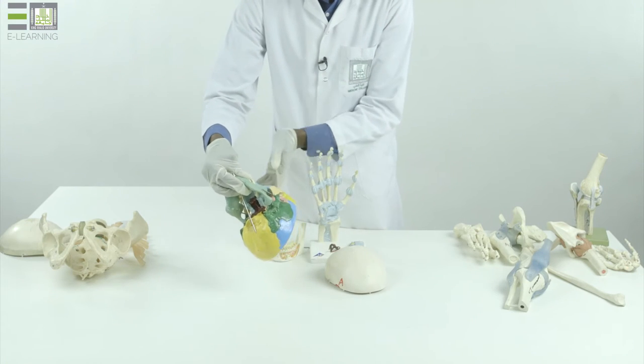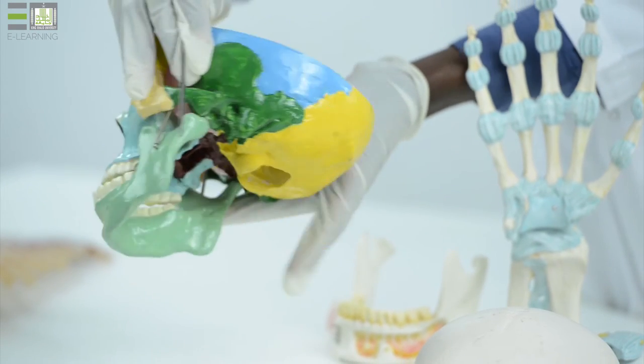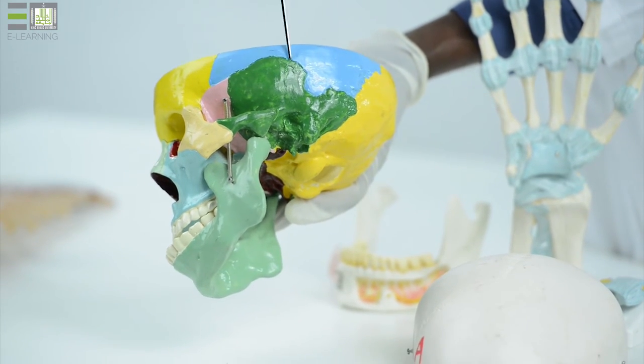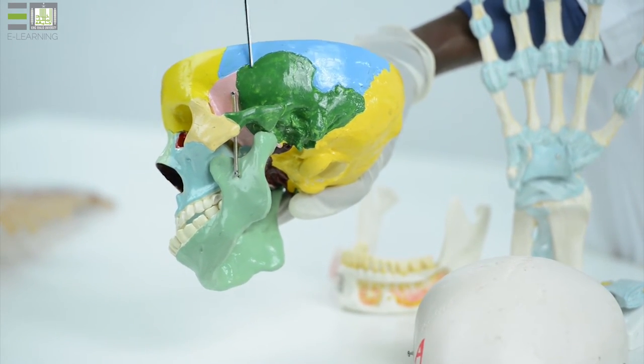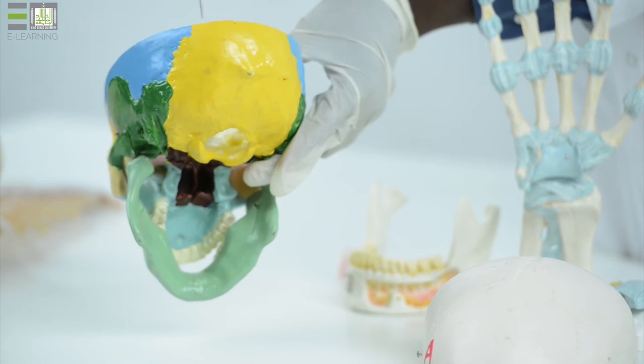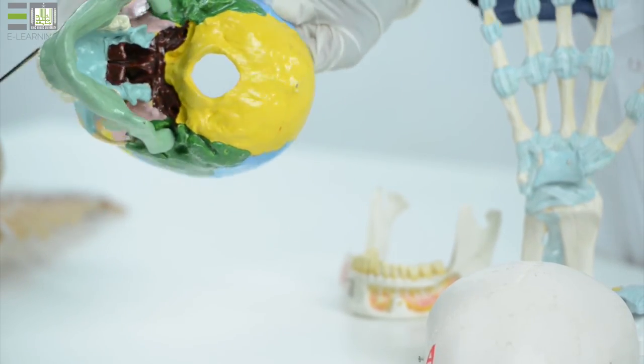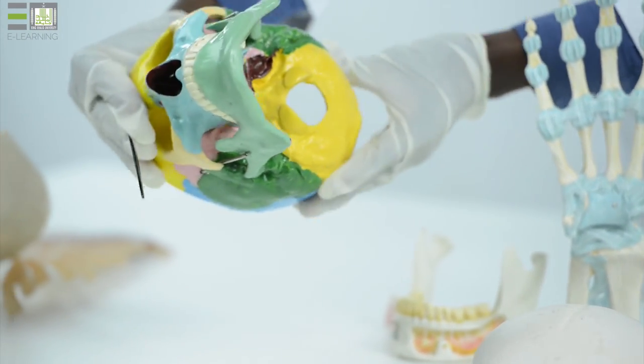In the lateral view of our skull, we can see these sutures in the lateral aspect, and here also posteriorly we can see these sutures. They are present in most parts of our skull.